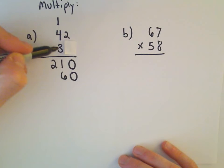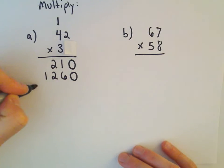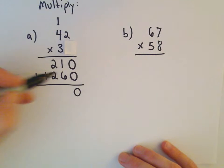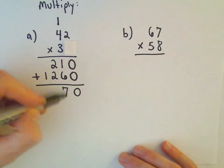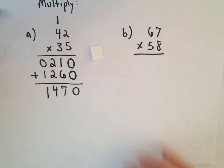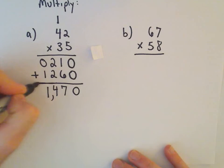So then, nothing to carry. 3 times 4 is 12. And now what we're going to do is we're just going to add all this stuff together. 0 plus 0 is 0. 1 plus 6 is 7. 2 plus 2 is 4. And then you can think about that as being a 0 plus 1 is 1. So it says if we multiply 42 times 35, we'll get 1,470 as our solution.